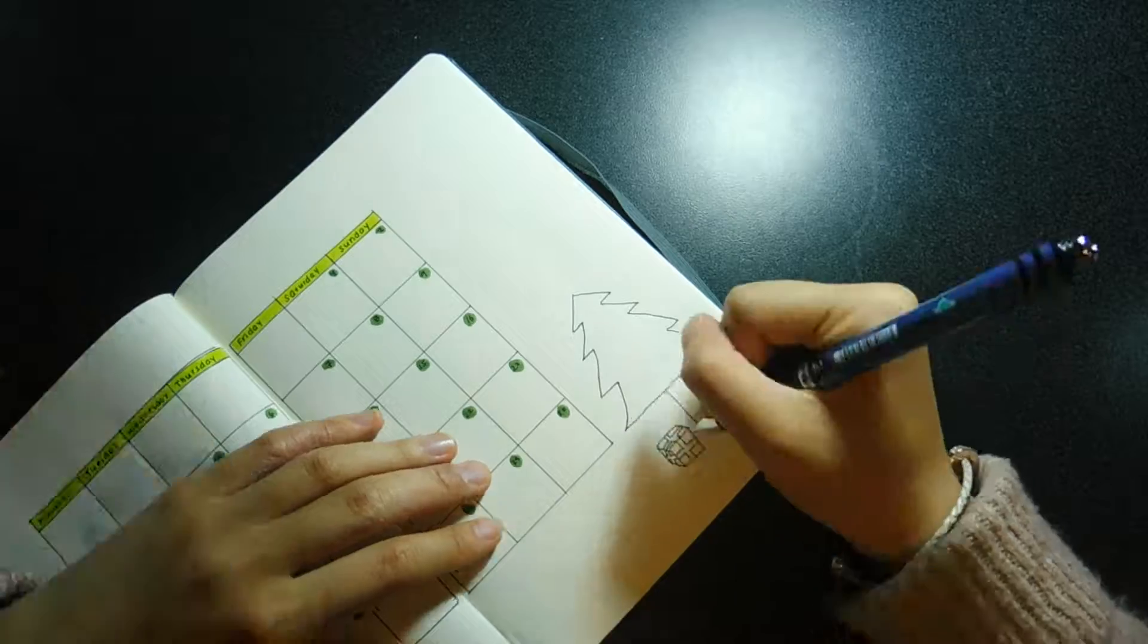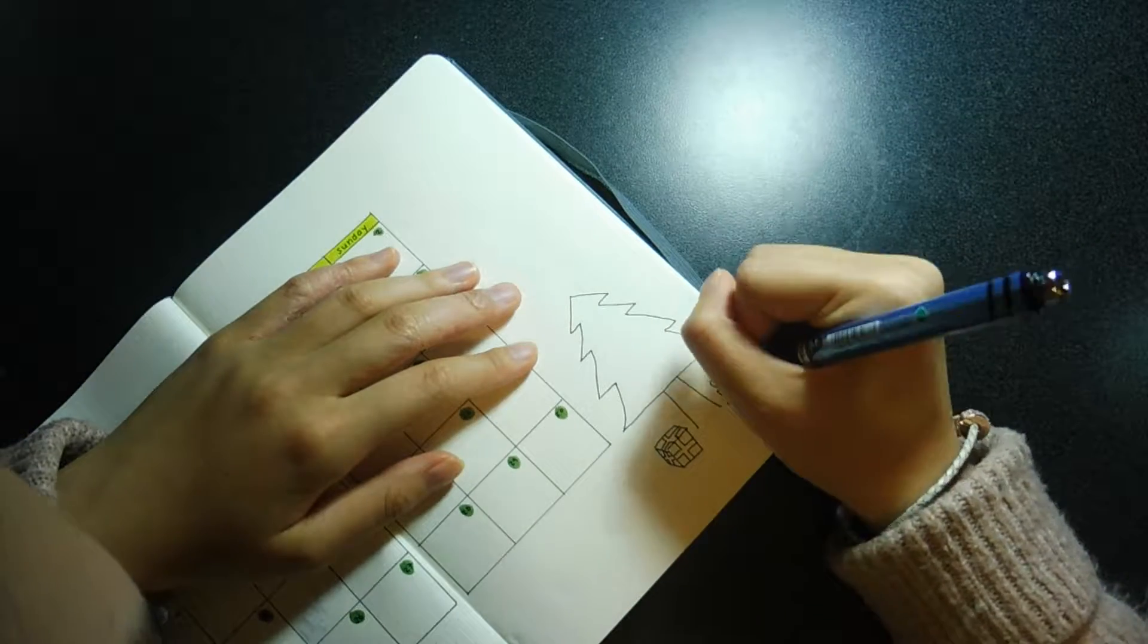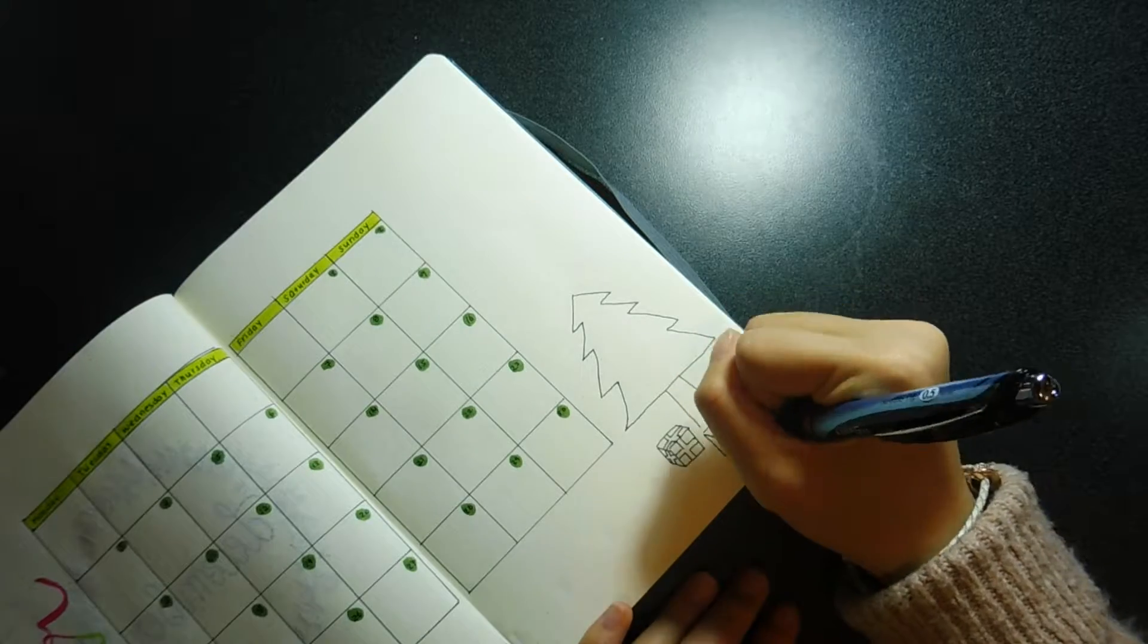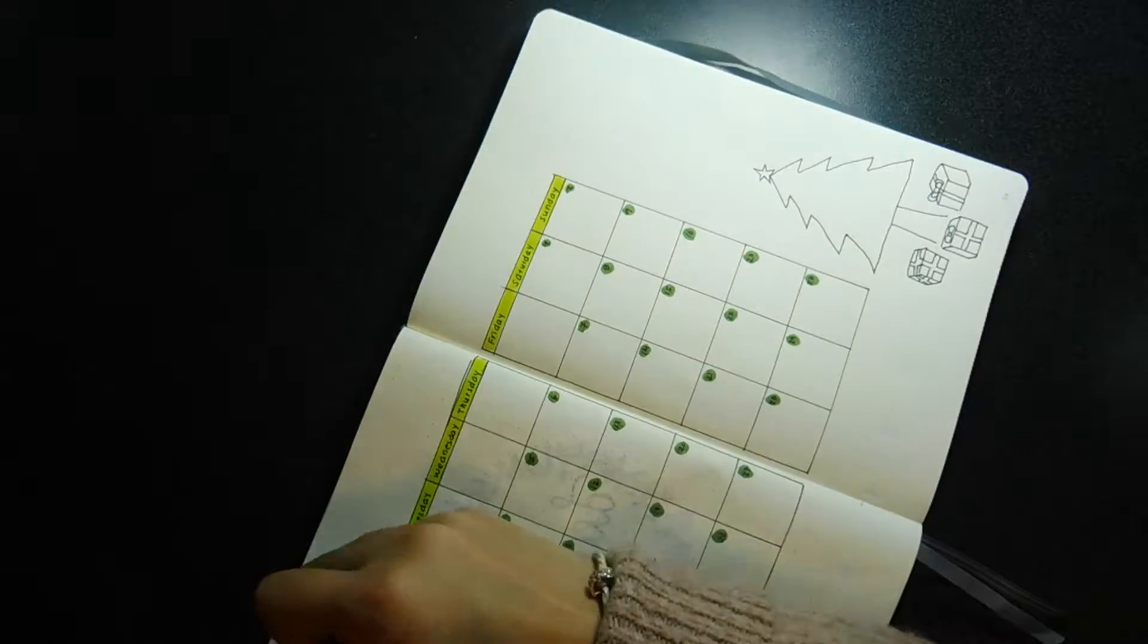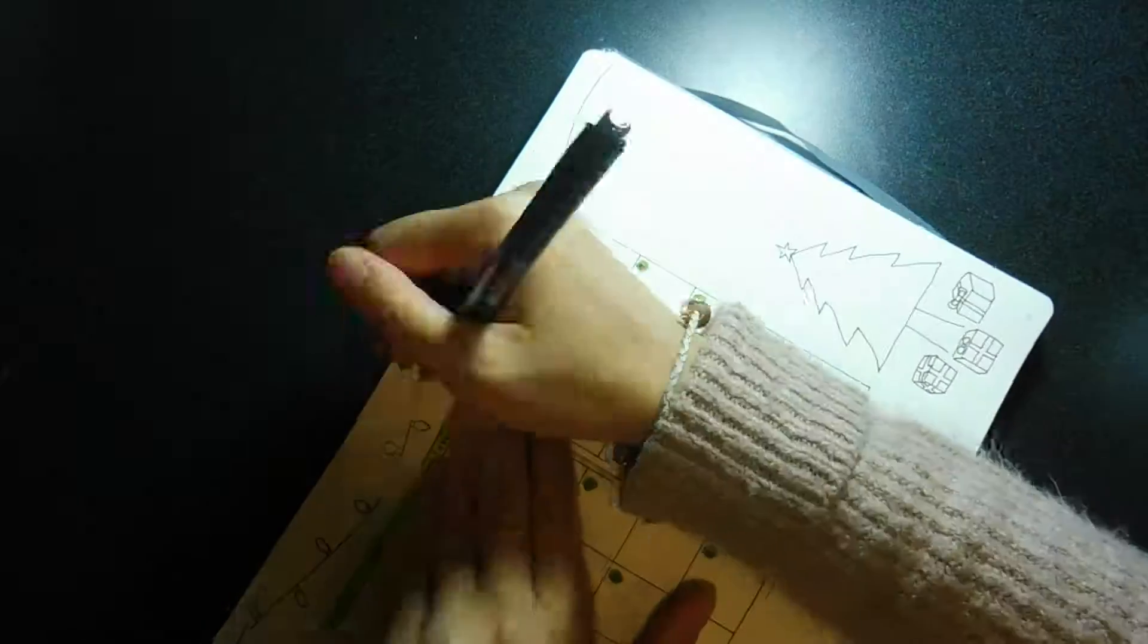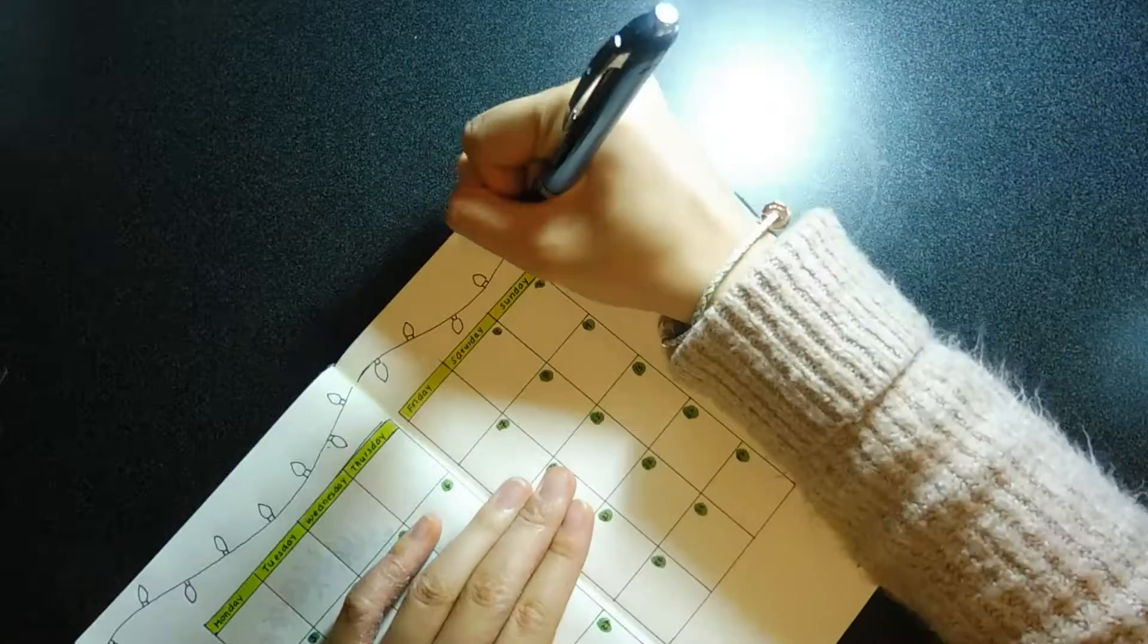Next to my monthly layout, I decided to do a Christmas tree with some presents underneath. It's very simple. I kind of drew cubes with like the ribbon on it. I'm not the best artist, but you can see what I'm doing.